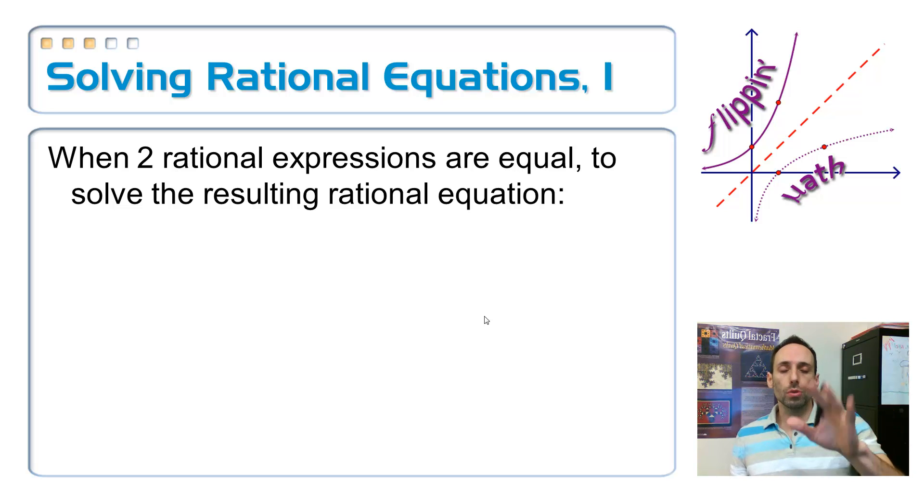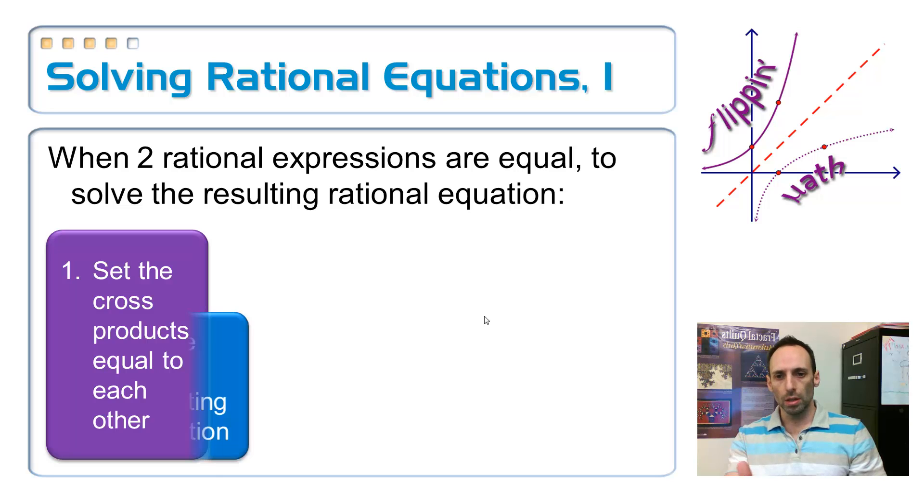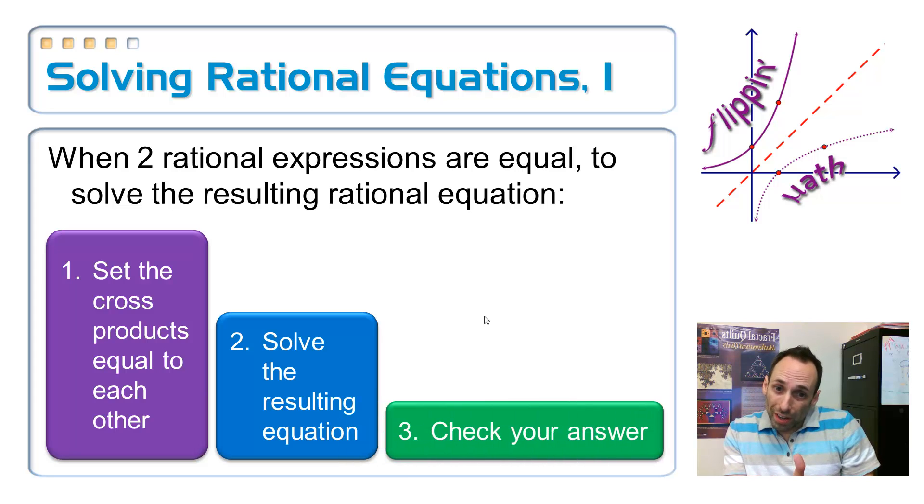So when solving rational equations, this is the first version. This is the first way to do it. Step number one, set the cross products equal to each other. That's what you do with a proportion. Solve your equation. And then number three, you want to check the answer. We didn't really do that before. The reason why you want to check the answer with a rational equation is sometimes you get an extraneous solution. Remember, extraneous means it looks like an answer, but whenever you plug it back into the original equation, it doesn't work. The main reason on this one is that we don't want to divide by zero.